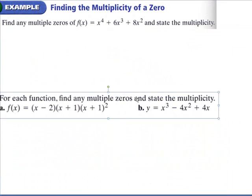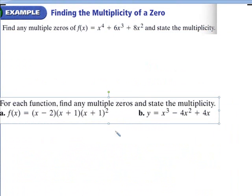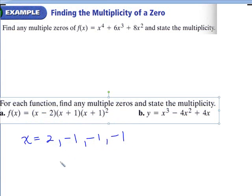Let's look at this last example: for each function, find the multiple zeros. This is nice because it's already factored out for us. One of the solutions is going to be 2. Then we have x plus 1, giving negative 1, but since it's (x plus 1) squared, negative 1 occurs two more times — so negative 1 has a multiplicity of three. It occurs three times. That's all it means to have a multiplicity.